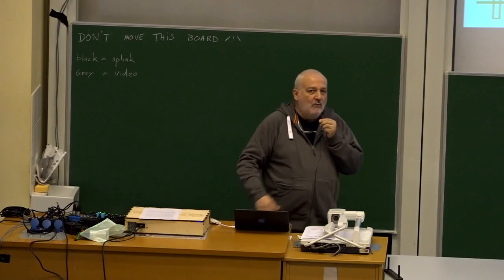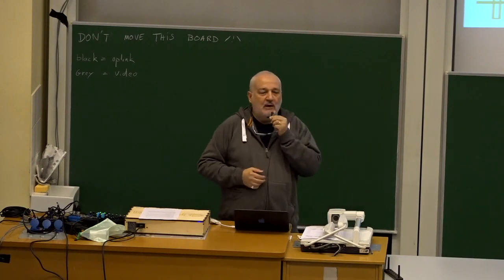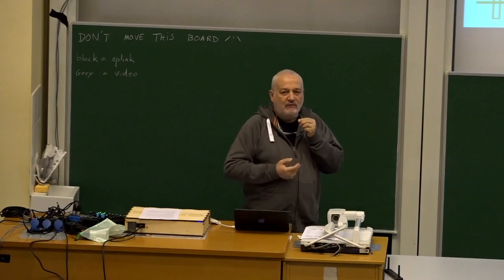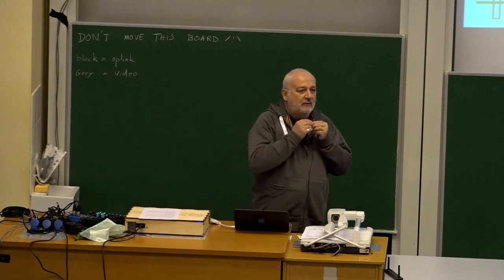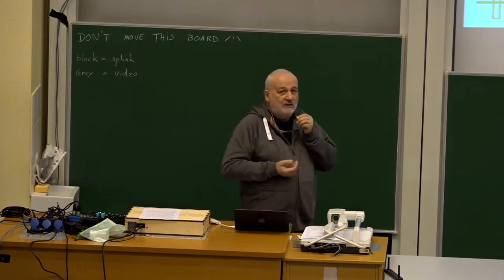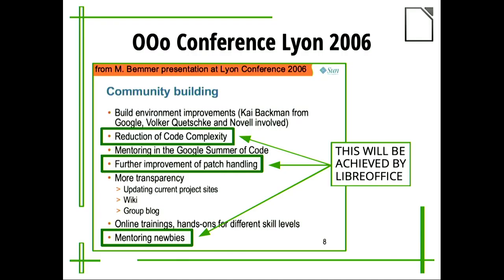One year after, this was discussed at the conference in Capodistria. Sun felt the need to explain something and made a presentation. This is a famous slide from that presentation — they said they would reduce the code complexity. If you look at the OpenOffice code in 2005, a non-developer would be frightened, and a developer would start questioning who wrote that code.